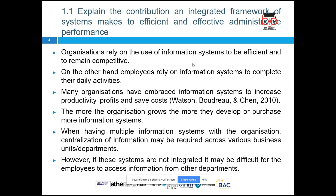Employees rely on information systems to complete their daily activities. Unlike the days when employees used to work with pen and paper, most systems are now digital. Even in core manufacturing organizations, most are using production automation systems where line managers specify the dimensions of a product and then batch processing is used to manufacture products. The core reason behind embracing information systems is to increase productivity, profits, and save costs.